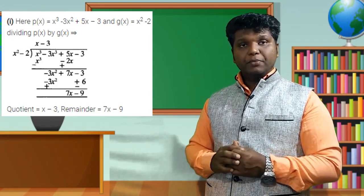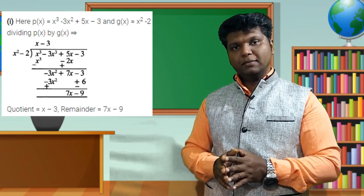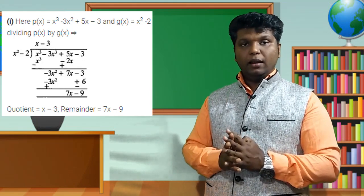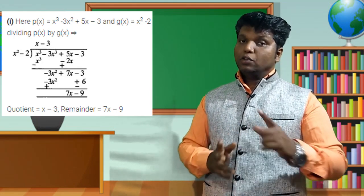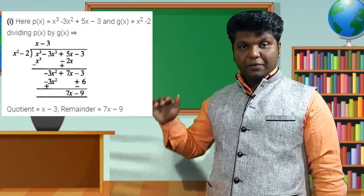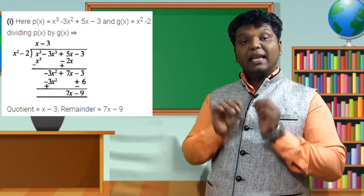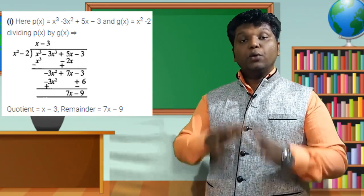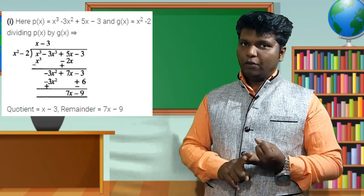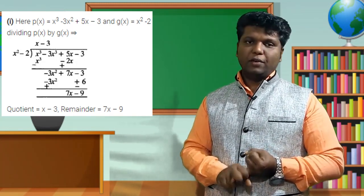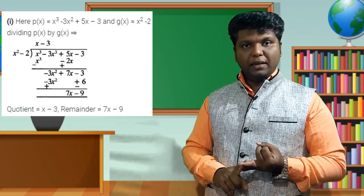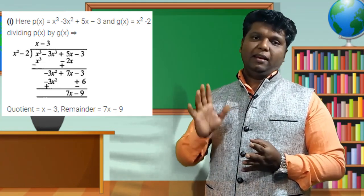The remainder is 7x − 9, which is of degree 1. Since the degree of the remainder is less than the degree of the divisor, we stop. So q(x) = x − 3 and r(x) = 7x − 9.